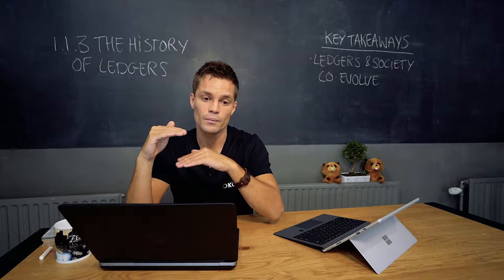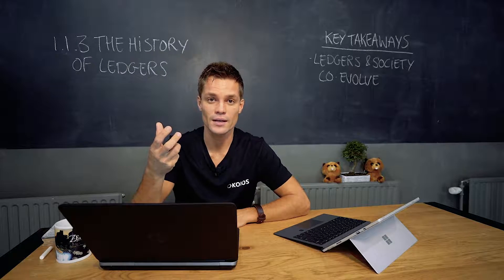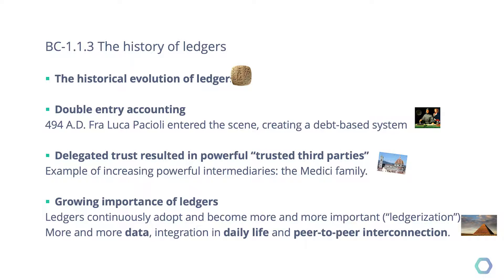A famous example of this is 494 after Christ, where an Italian monk invented not a new ledger, but a new way to record transactions within that ledger. So not only the form of ledger changes — from clay tablet to a blockchain, for example — but also the way we record transactions within that ledger changes. An example of this second type was around 1,500 years ago, where a guy invented the double entry accounting system.